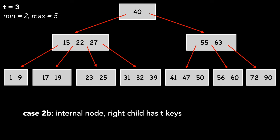Case 2b is similar, except that the right child has T keys, and we move the key's successor into the parent. We'll show this by deleting 27, moving the successor 31 into its place.